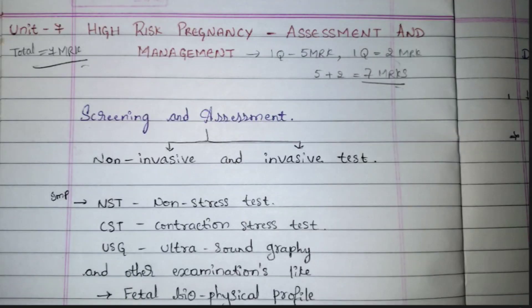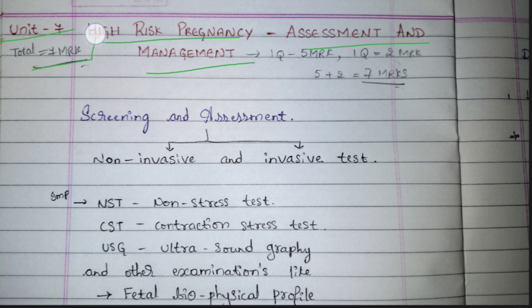Hello guys, welcome back to the channel. Today we are going to see Unit 7, that is High Risk Pregnancy Assessment and Management — what are the risk things related to pregnancies, how we are going to assess them, how we are going to find them, and how we can manage them. From this chapter you will get seven marks totally: one question for five marks and one question for two marks.